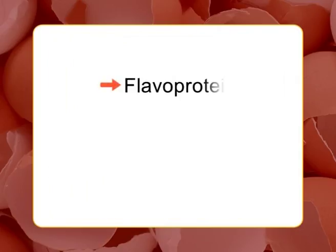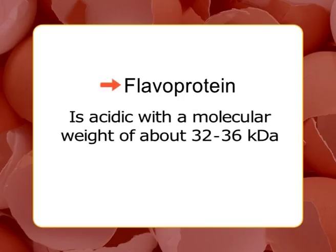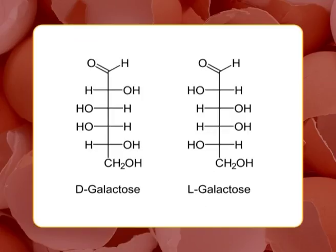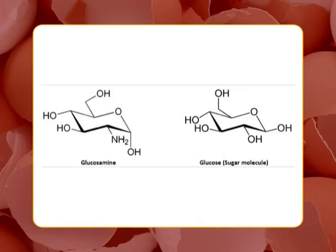The sixth protein is flavoprotein, which is acidic with a molecular weight of about 32 to 36 kilodaltons. It contains a carbohydrate moiety of about 14 percent made up of mannose, galactose, and glucosamines, 7 to 8 phosphate groups, and 8 disulfide bonds. It ensures transfer of riboflavin from blood serum to the albumin in egg white.